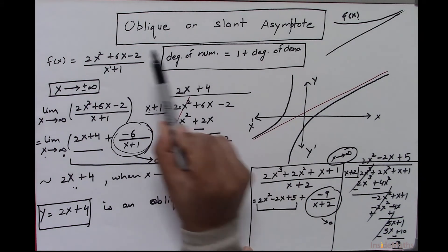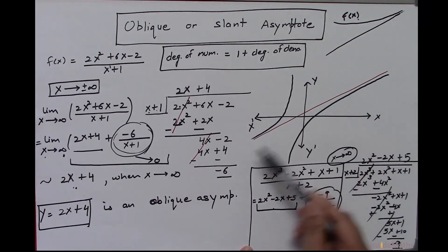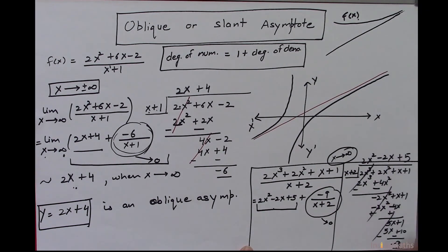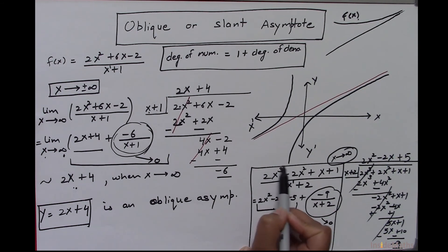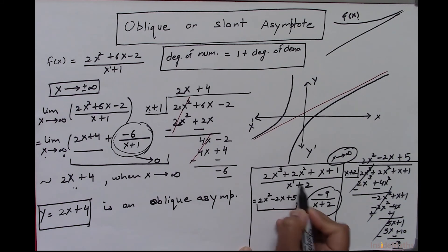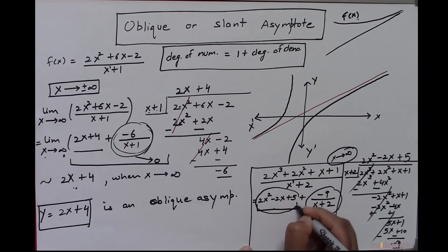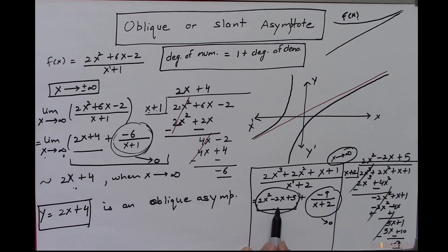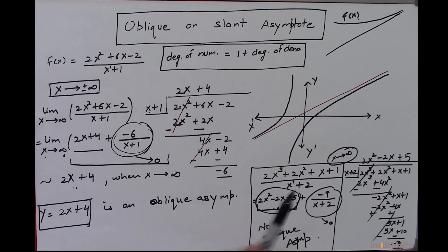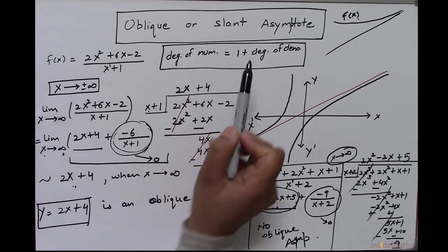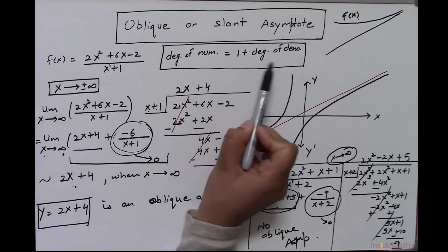Since an oblique or slant asymptote must be a line — a linear equation — if the degree of the numerator is more than 1 plus the degree of the denominator, we are left with a non-linear expression, which means there is no oblique asymptote. So it is very important that the degree of the numerator must be exactly 1 more than the degree of the denominator.